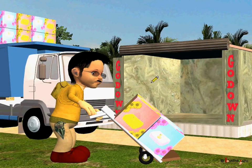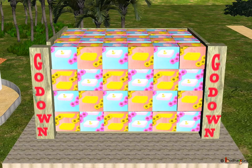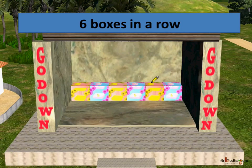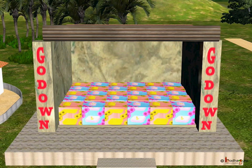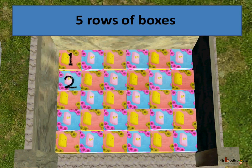Now let us see stepwise how many boxes could be put in the godown. Six boxes got filled up in a row. And Chaman continued to fill all the rows one by one until the whole floor area got used up. Five rows of boxes were filled.